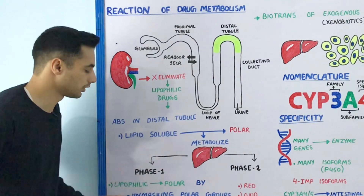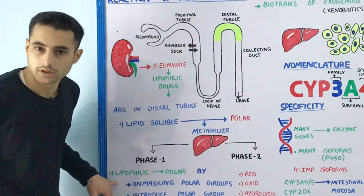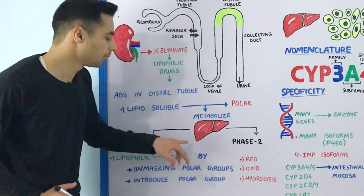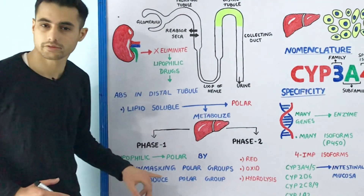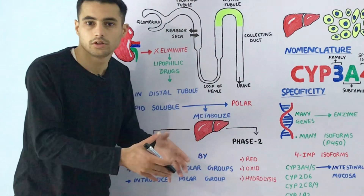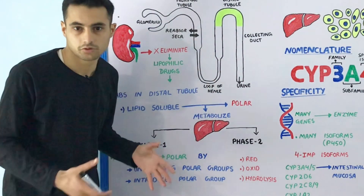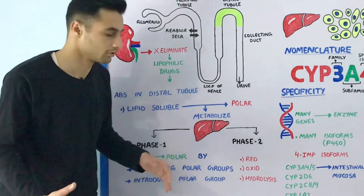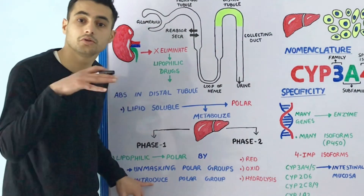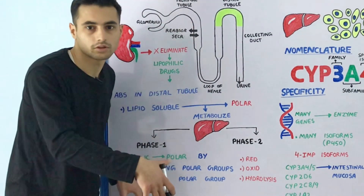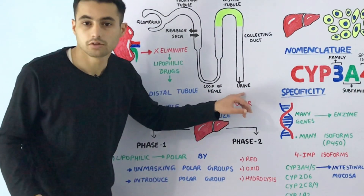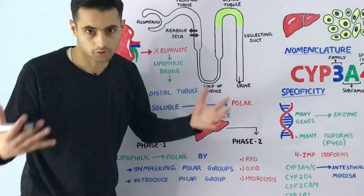Let's talk about the phase one reaction. The lipophilic drugs are converted into polar compounds by unmasking or exposing the polar group already present in the drug, so it can be eliminated from the body, or by introducing and adding a polar group into the drug to make it polar and water soluble so it can be excreted in the urine.